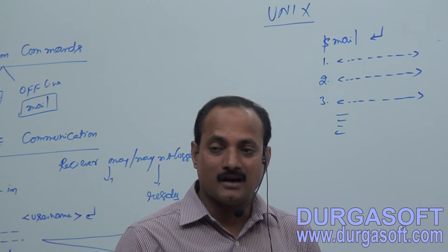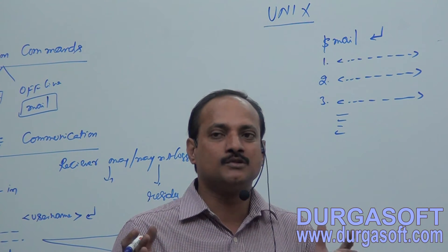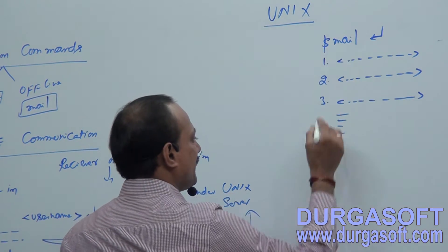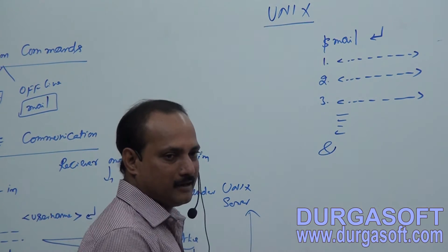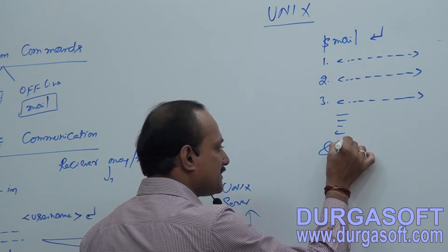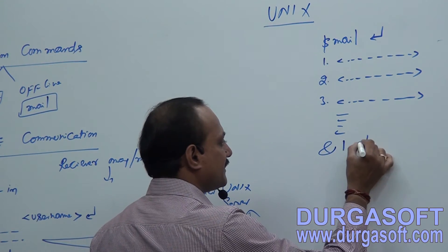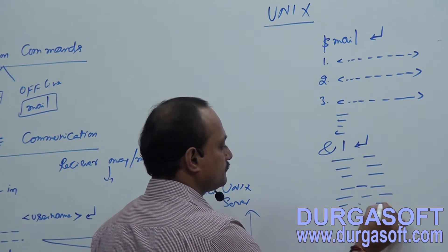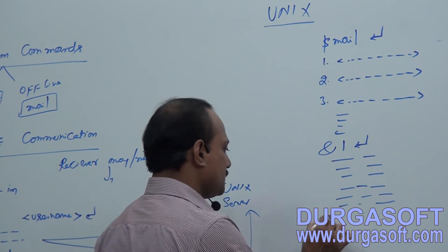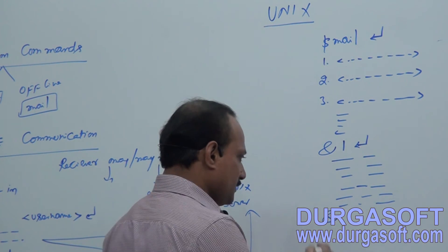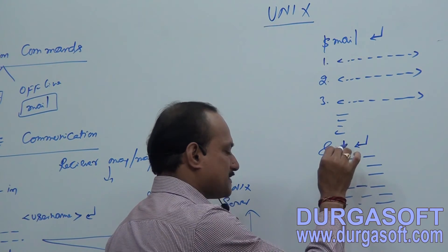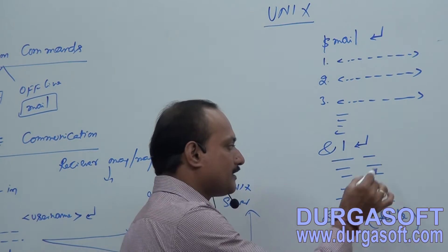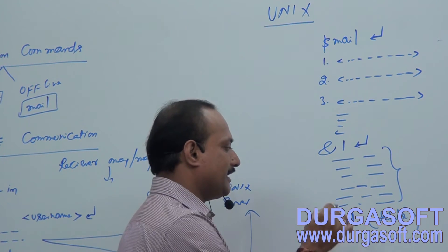To open one mail completely and read its full details, after the mail list you will see an ampersand symbol. At the ampersand prompt, type the mail number (e.g., 1) and press enter. It will display the complete details of that message. At the end of the message, the ampersand symbol appears again. If you want to remove that message, press 'D' for delete — the message just opened will be deleted.